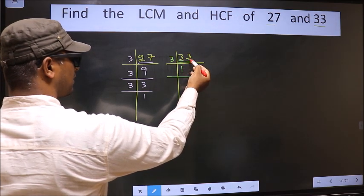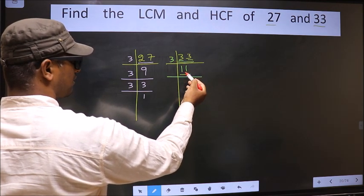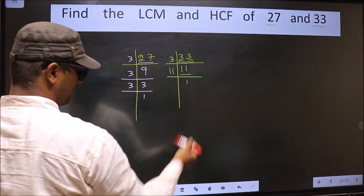The other number 3, when do we get 3 in 3 table? 3 once 3. Now here we got 11. 11 is a prime number, so 11 once 11.